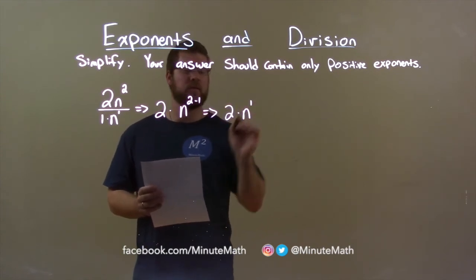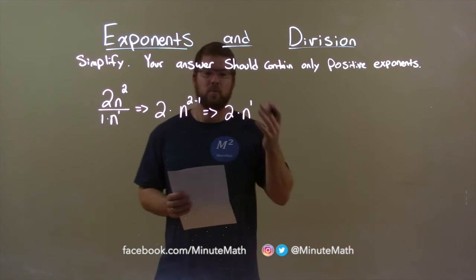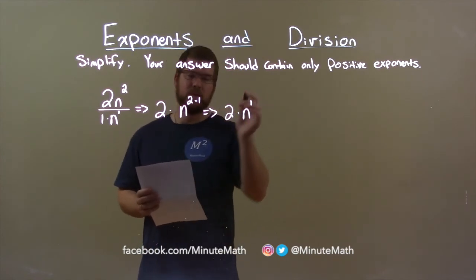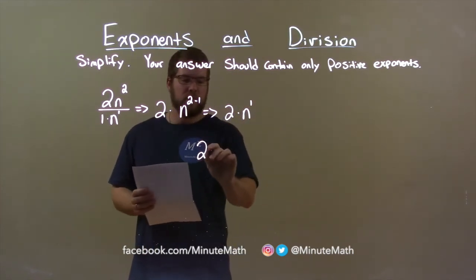So, we have 2 times n to the first power, which we could write as our final answer here. We don't really need the one exponent. 2n, and there we have it.